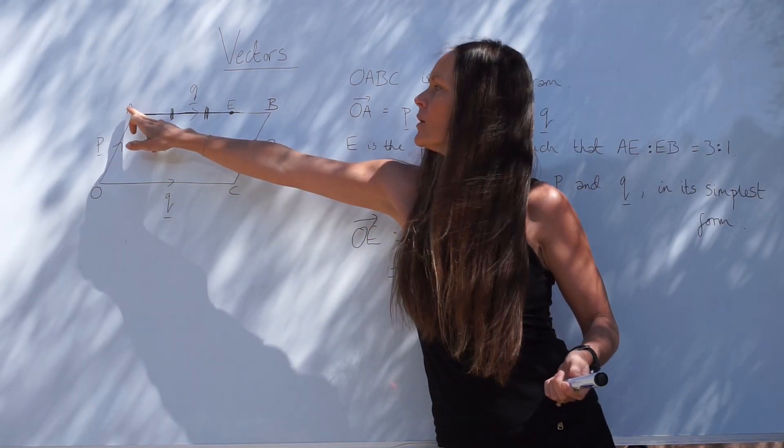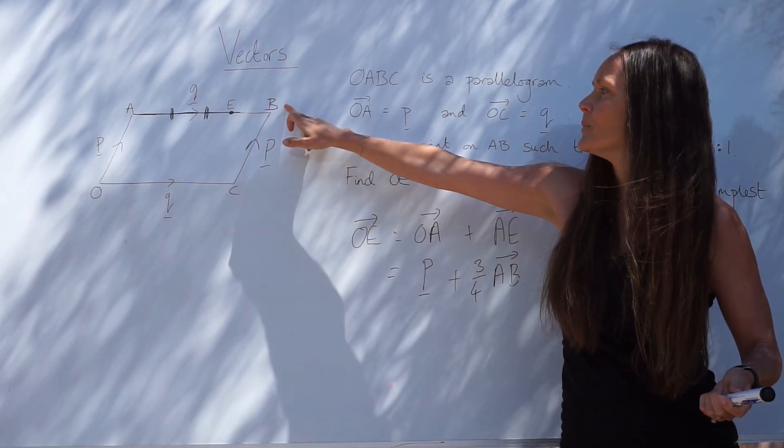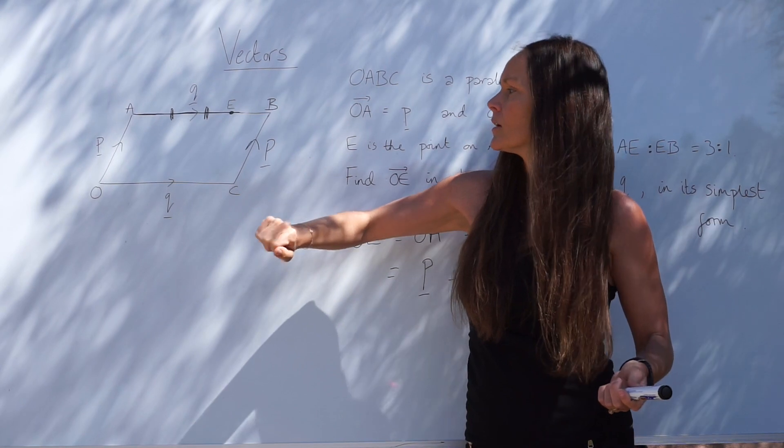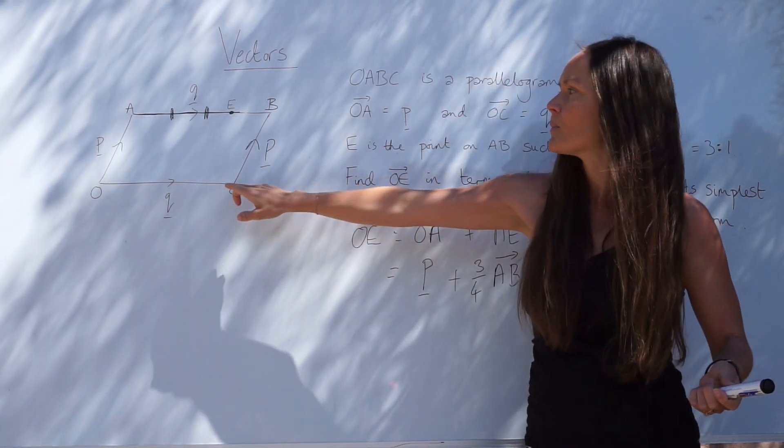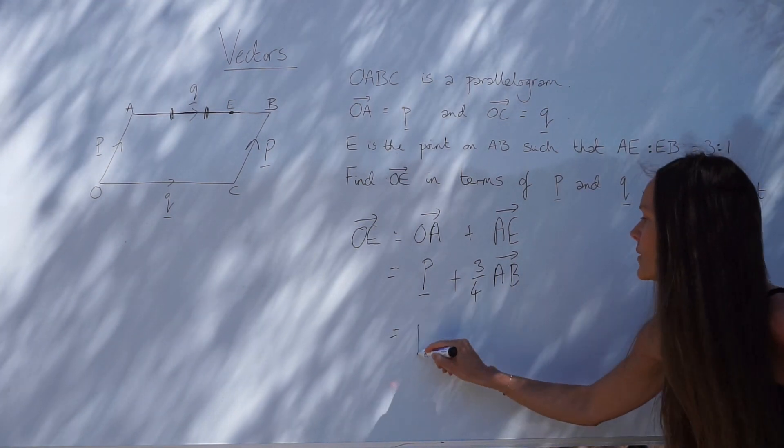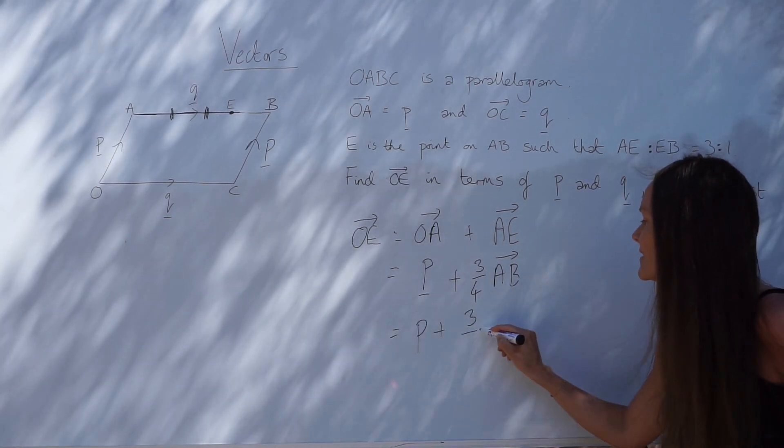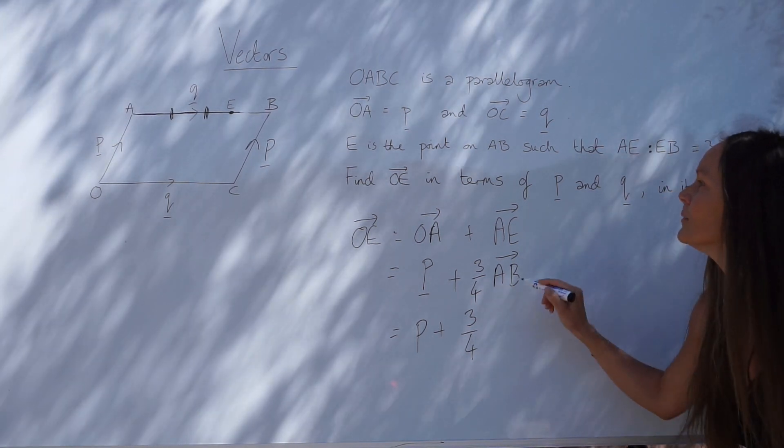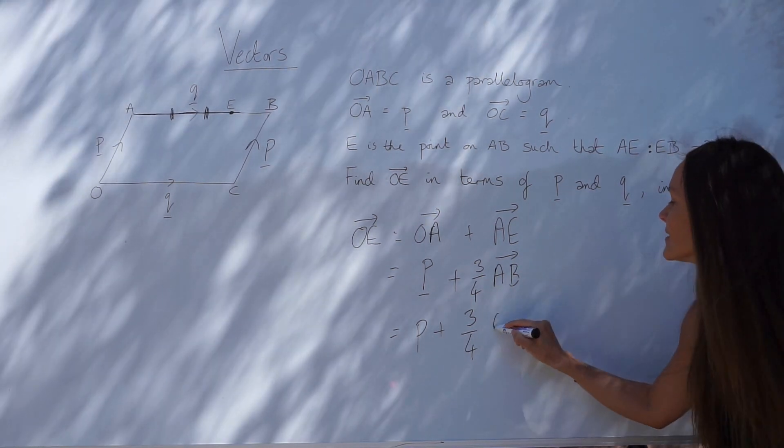Because remember, we know that this line here from A to B is vector Q. It's the same as OC because it's parallel and the same length. We labelled it at the start. So the last step would be to replace A to B, with the arrow above, as Q.